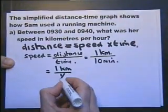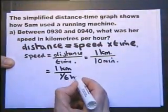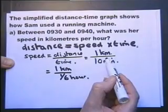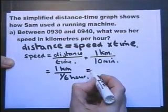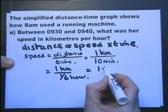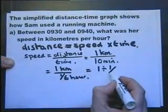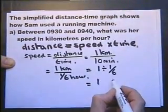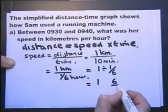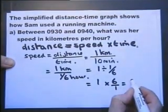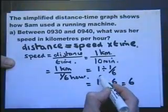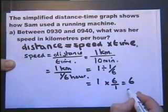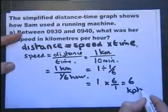A minute is a sixth of an hour, so the bottom must be in hours. We now have 1 divided by a sixth. Whenever you divide fractions, you turn the second fraction upside down and call it multiplication. One divided by a sixth is six, and that's kilometers per hour.